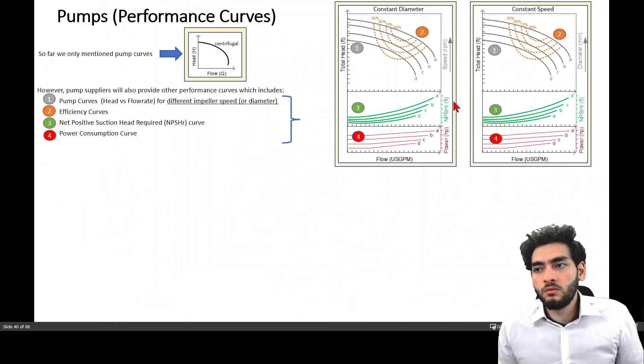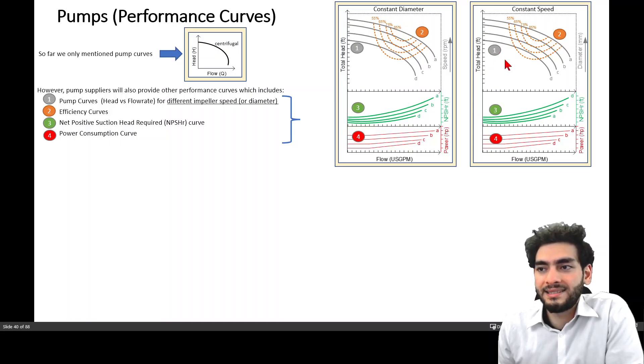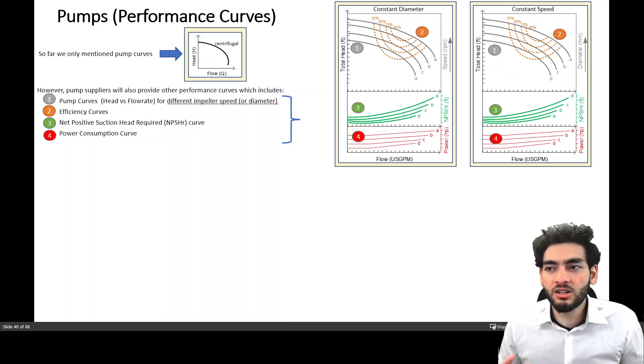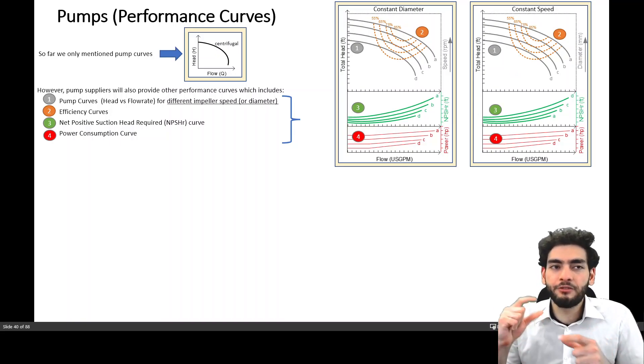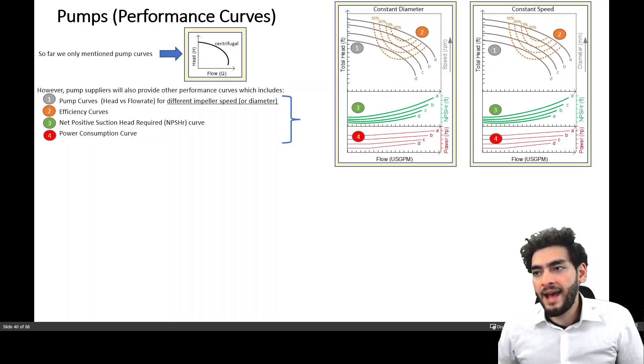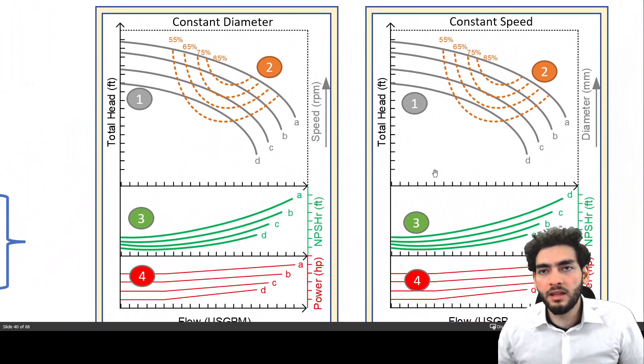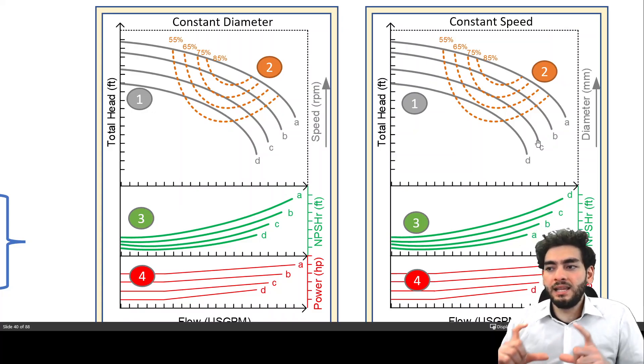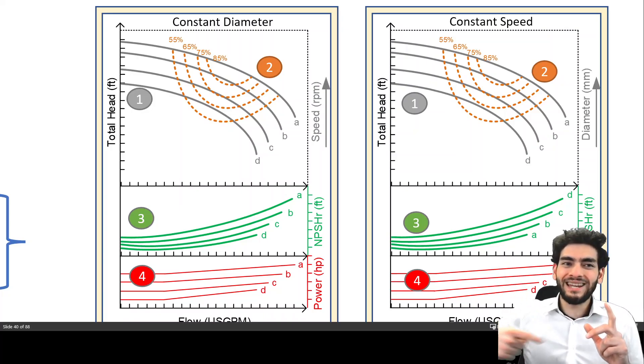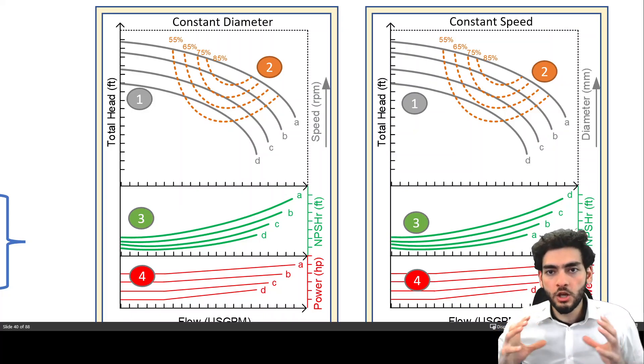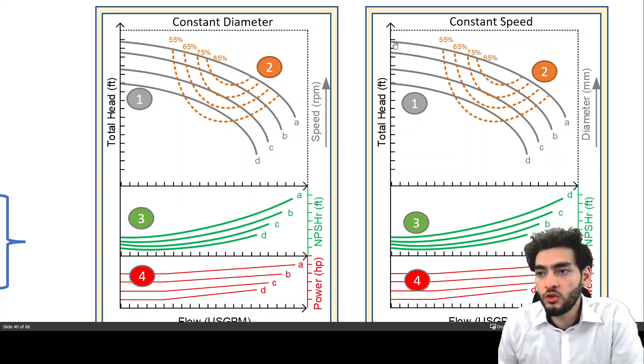Now, if we look at the graph on the right hand side, it's essentially the same performance curves, but for different impeller diameters. And let's look at them together. So if you increase the impeller diameter, what's happening is now you're providing more centrifugal force to the fluid. And so as a result of that, you will generate more head and flow rate.